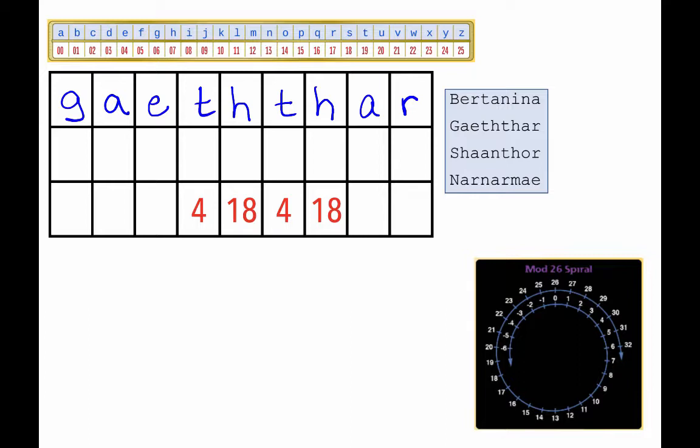Now, the second row contains the numbers that correspond to the letters, as in the letter-to-number table. So we enter those numbers. G corresponds to 6, A to 0, E to 4,